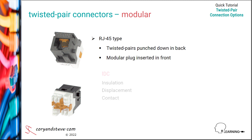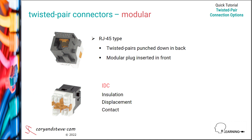The term insulation displacement contact or IDC is used to describe the punch down side, where a tool is used to push each of the eight wires in a four pair cable into a V-shaped connection point. As the wire goes in, its insulation is cut or displaced, making a metal-to-metal contact between the copper conductor and the connector.